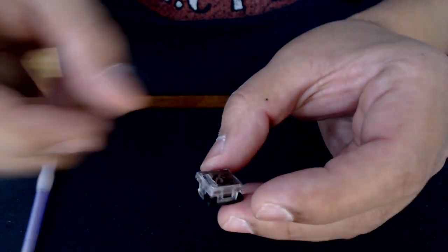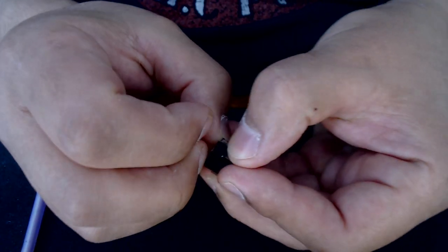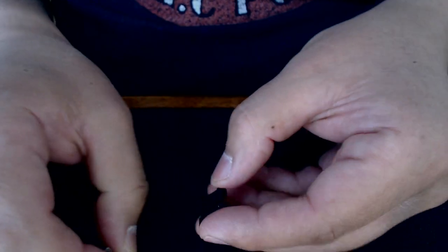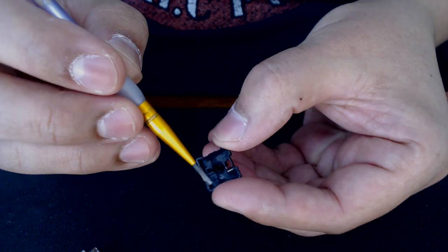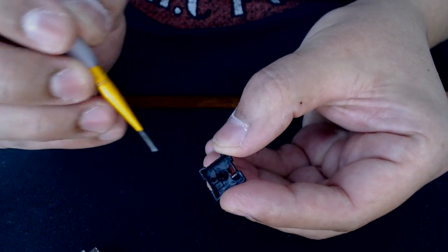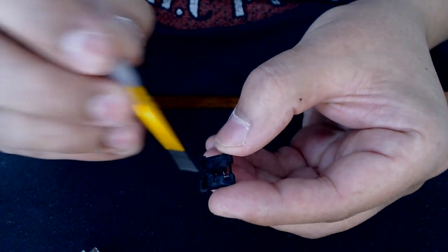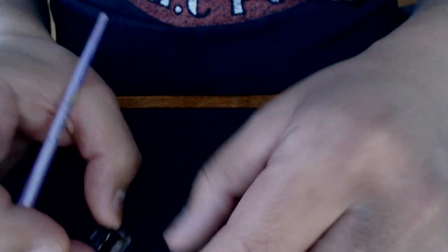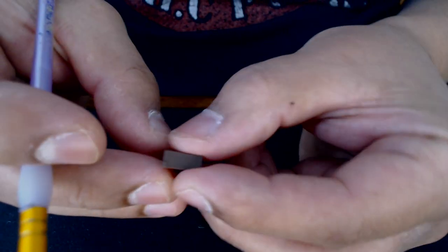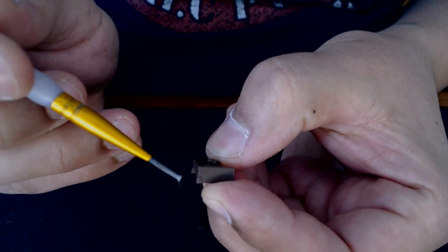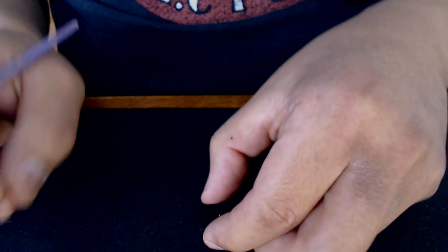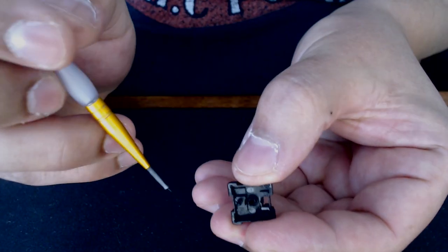To lube it, you just take it apart. I started with the bottom housing, and you can actually see this corner right here, this corner right here, all these corners. This particular switch hits it. And if you take the brown part out, you'll actually see that in each of those corners there's an extra bump, so that bump will add to the scratchiness.